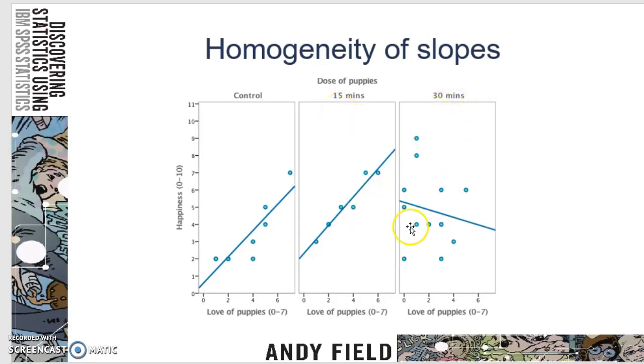So in this case, we do not have homogeneity of regression of the slopes, because this has to do, again, with the prediction of the means.